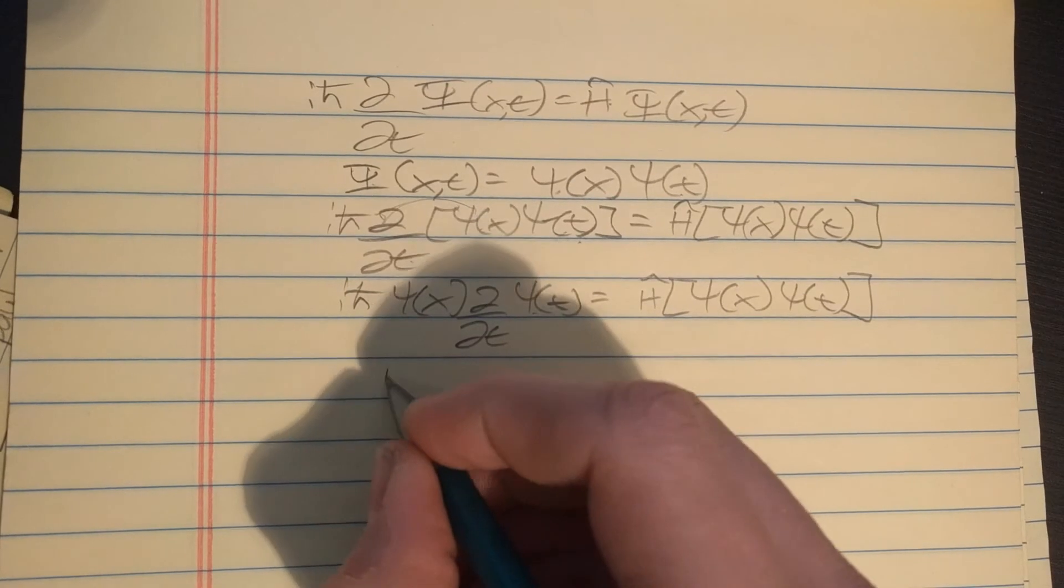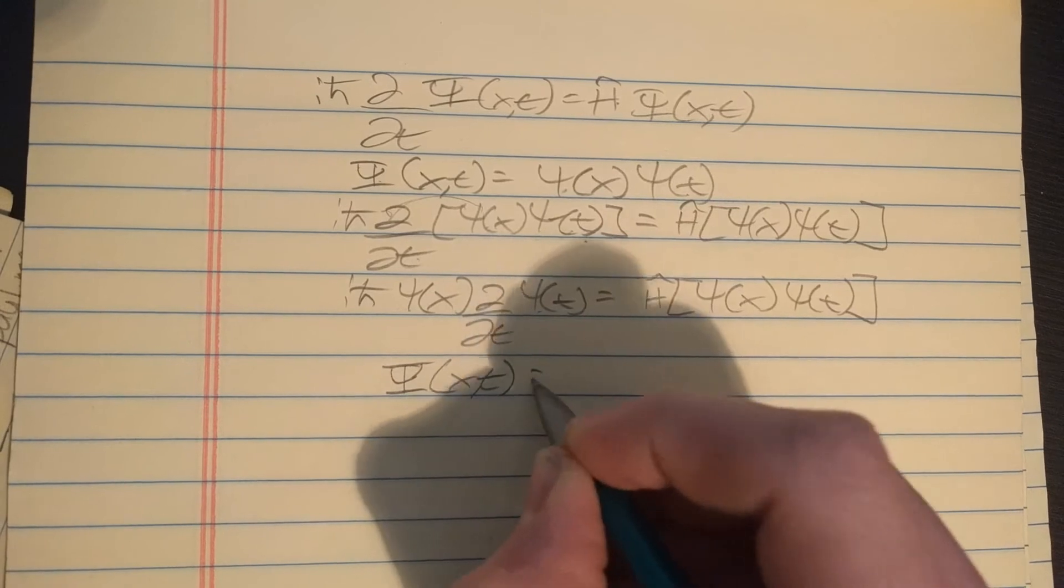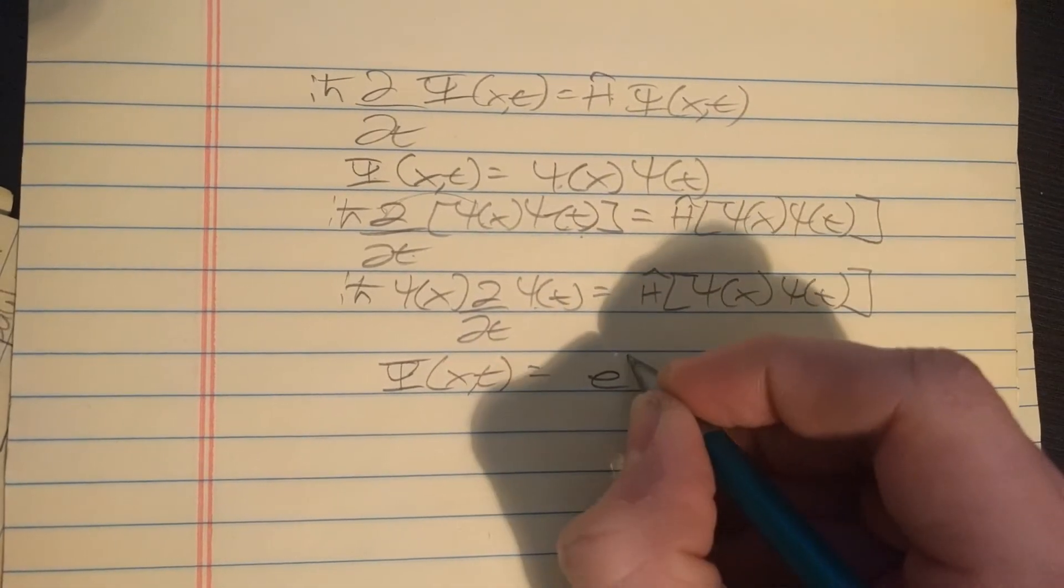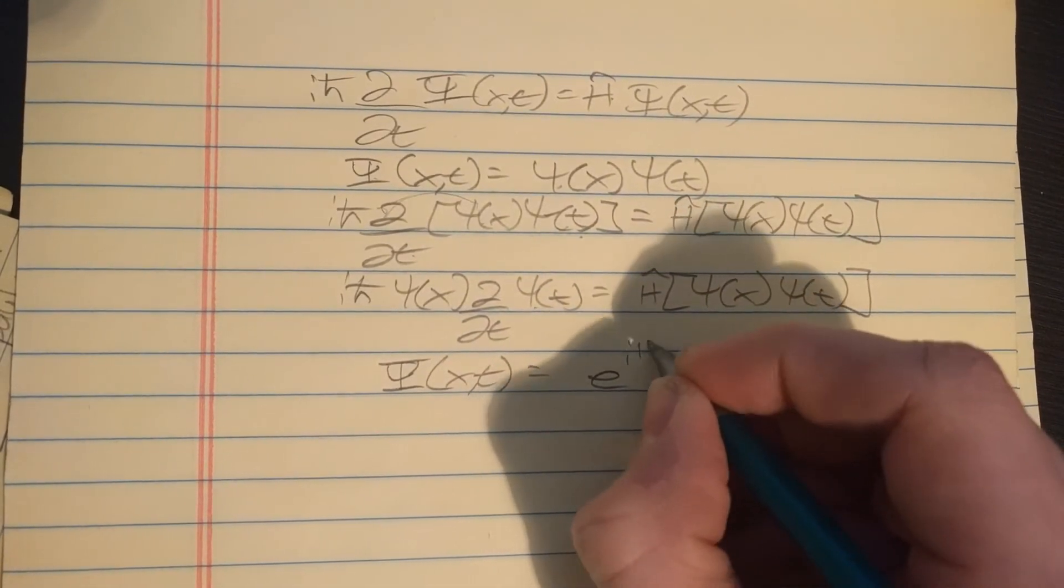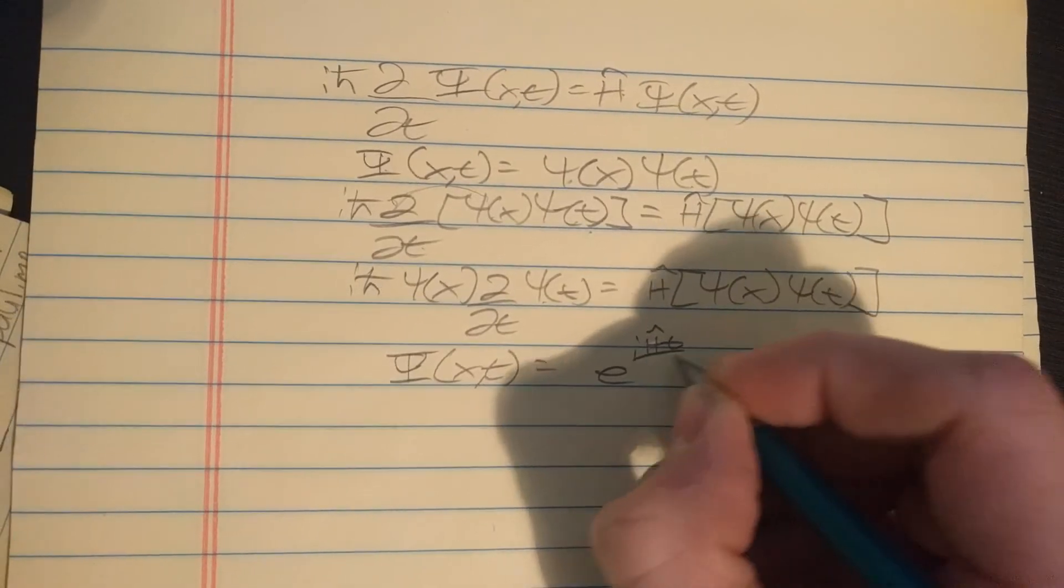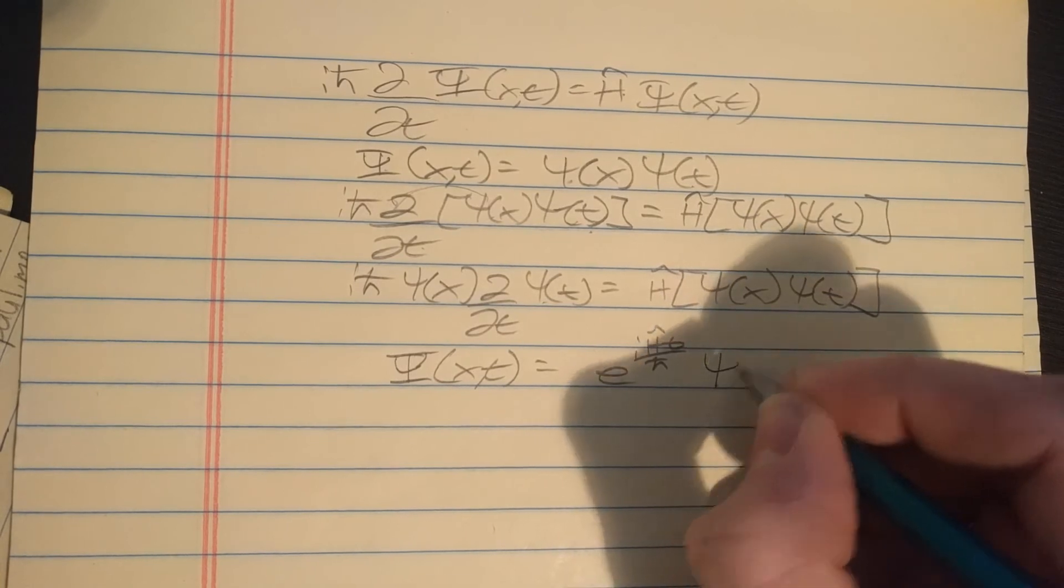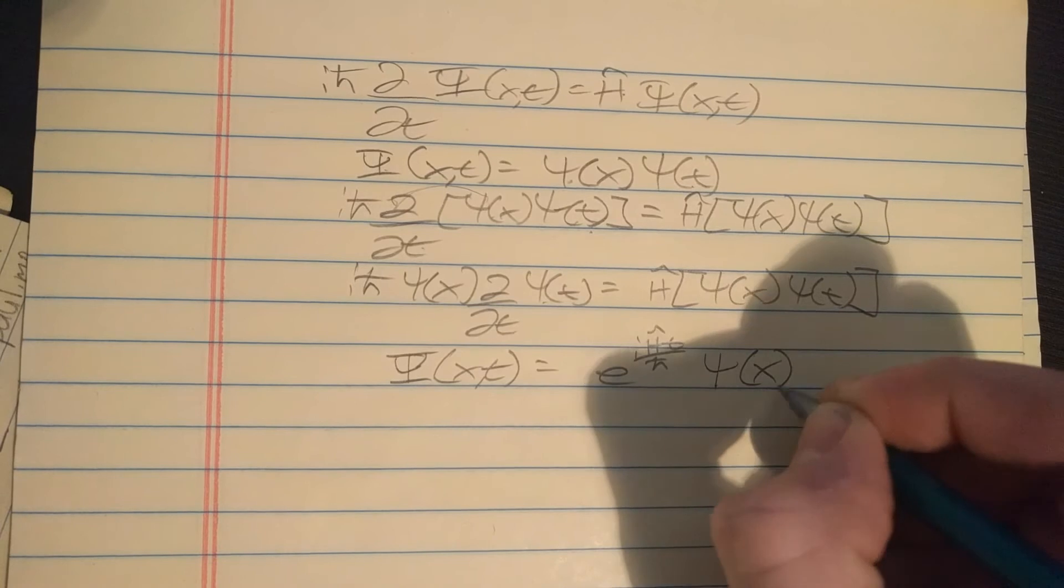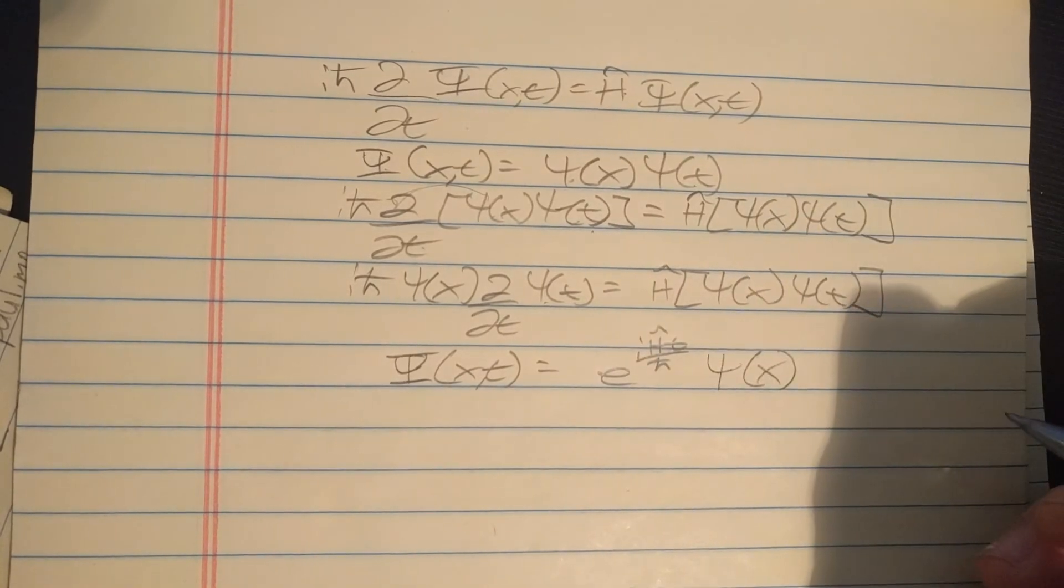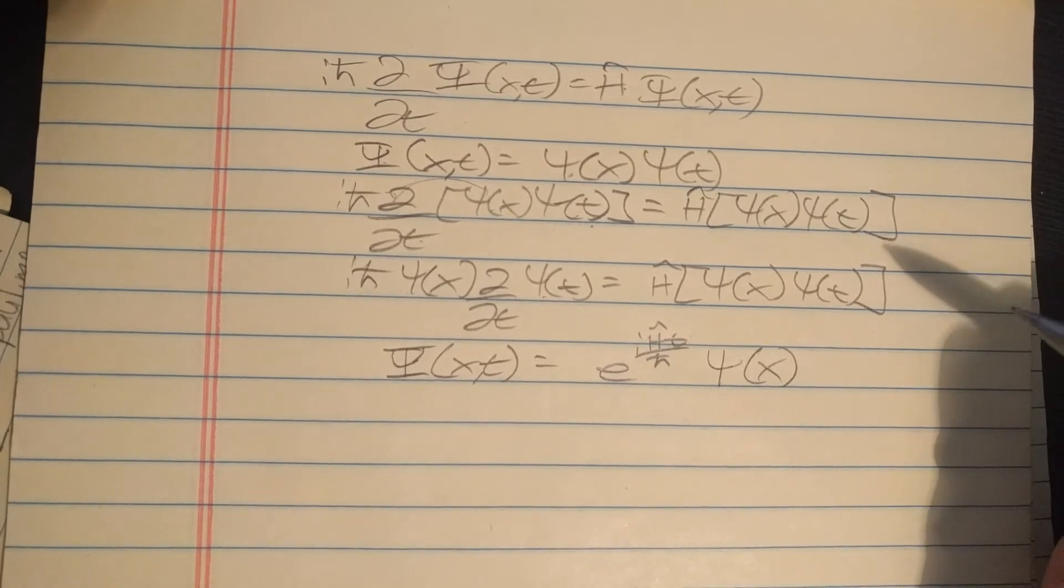Now let's try to think of a solution that's gonna satisfy this. One solution that will satisfy it - I'm kind of cheating because I already know the answer - is e to the i times the Hamiltonian times time over h bar, and then times the part that does not depend on time.